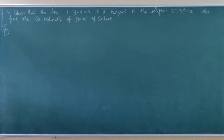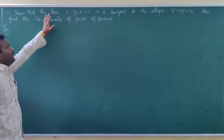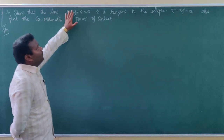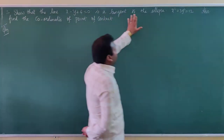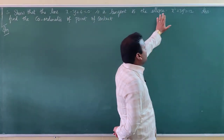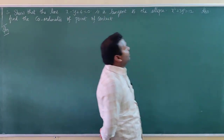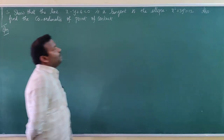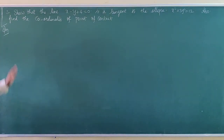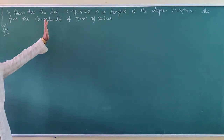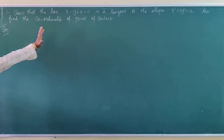This is Section 5.4, third sum. Show that the line x minus y plus 4 equal to 0 is a tangent to the ellipse x squared plus 3y squared equal to 12. Also find the coordinates of the point of contact.